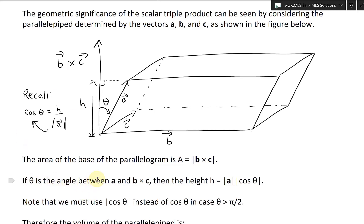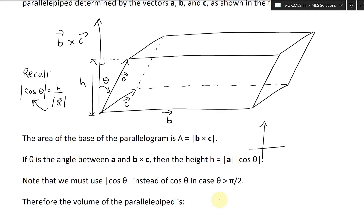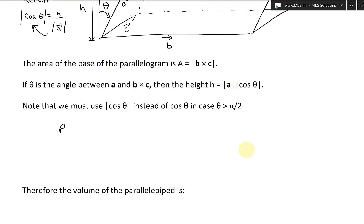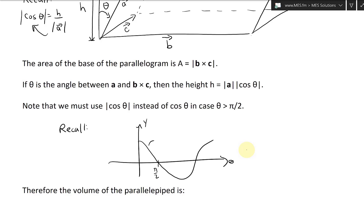Note that we must use the absolute value of cosine, in case cosine theta is greater than pi over 2. Recall that cosine becomes negative past pi over 2 — that's why we take the absolute value here.